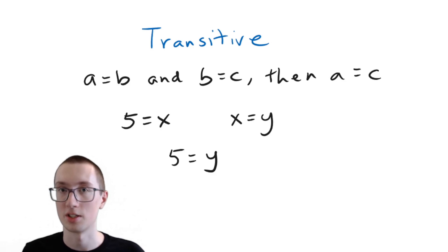we can combine these two statements and say that 5 is the same as Y. Because 5 and X are the same, X and Y are the same, so 5 and Y must be the same. We're connecting the two equations together. And finally,